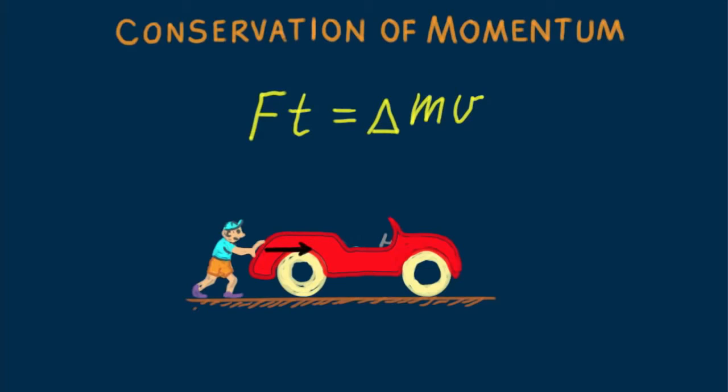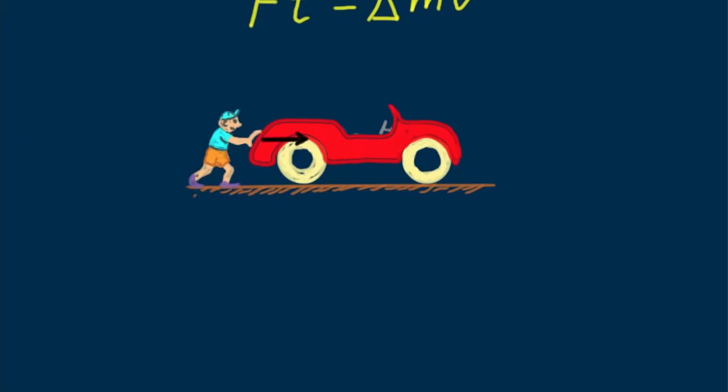If no external impulse is exerted on the auto, no change in momentum occurs — none. No change in momentum means that a stationary auto remains stationary and a moving auto continues in whatever motion it has. The same is true for cars, grocery carts, or whatever. No impulse, no change in momentum. This relates to inertia and Newton's first law.